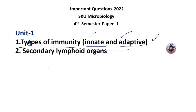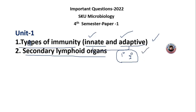The second important topic is secondary lymphoid organs. The primary lymphoid organs include bone marrow and thymus. Secondary lymphoid organs include spleen and lymph nodes. There are two types of lymphoid organs, including bone marrow.